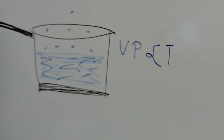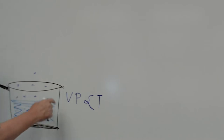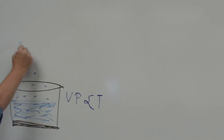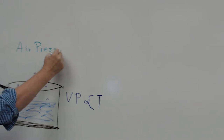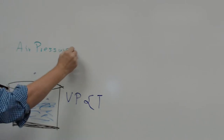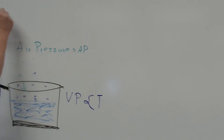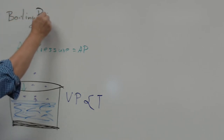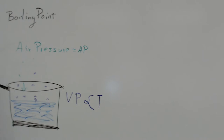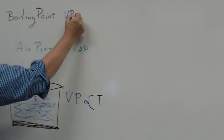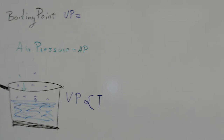When a liquid's vapor pressure equals the air pressure that's pushing back — we'll abbreviate this AP — so air pushes back down, vapor pressure is coming out of the liquid. When the two are equal, that is the definition of a boiling point. Any liquid will boil once its vapor pressure equals that of its surrounding air pressure.